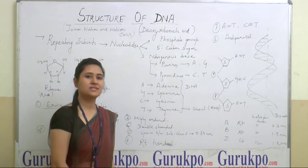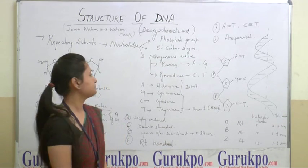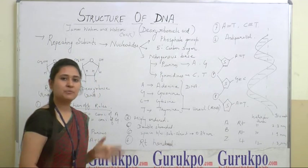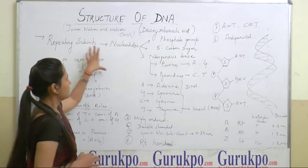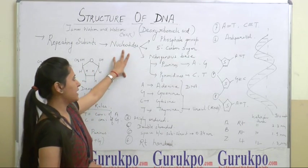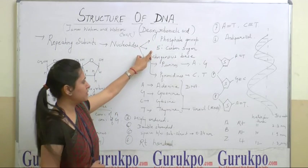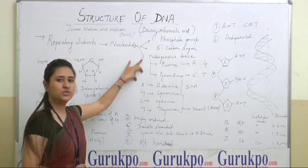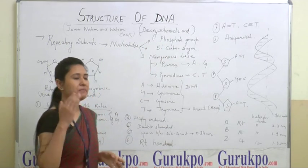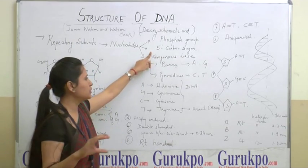DNA stands for deoxyribonucleic acid and it is the main component of the nucleic acid. DNA consists of certain subunits which are known as nucleotides. These nucleotides, they are of three kinds: phosphate group, 5-prime carbon sugar, and nitrogenous base. The phosphate group forms the main backbone that joins the sugar nucleotides together.